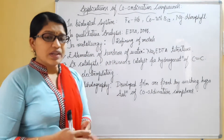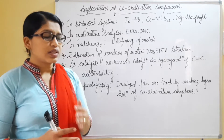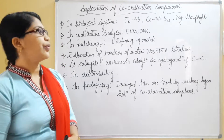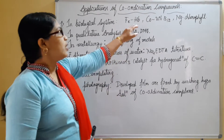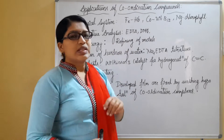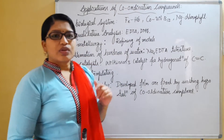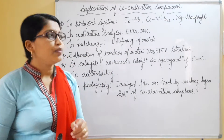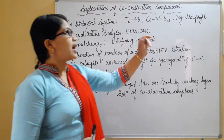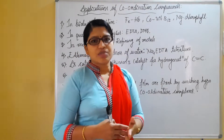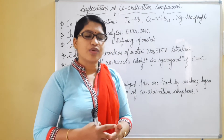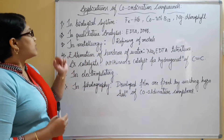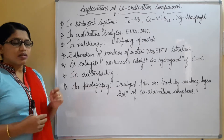First, coordination complexes generally play an important role in living systems. Hemoglobin consists of the iron metal, cobalt is present in vitamin B12, and magnesium is also present in chlorophyll.